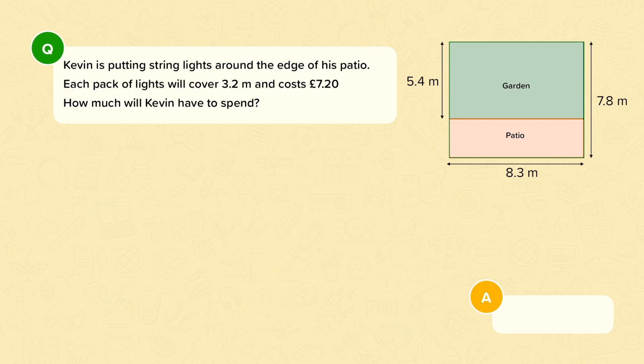Here we have a slightly harder version of the same question. Kevin is still putting string lights around the edge of the patio. The measurements are the same as before. We've already worked out that the perimeter of this patio is 21.4 metres. But now the question contains an extra piece of information. We are told that each pack of lights will cover 3.2 metres and costs £7.20. And we need to work out how much Kevin will have to spend.